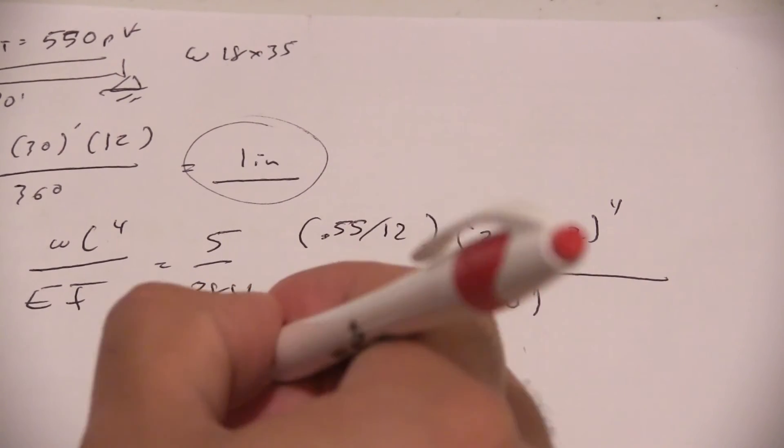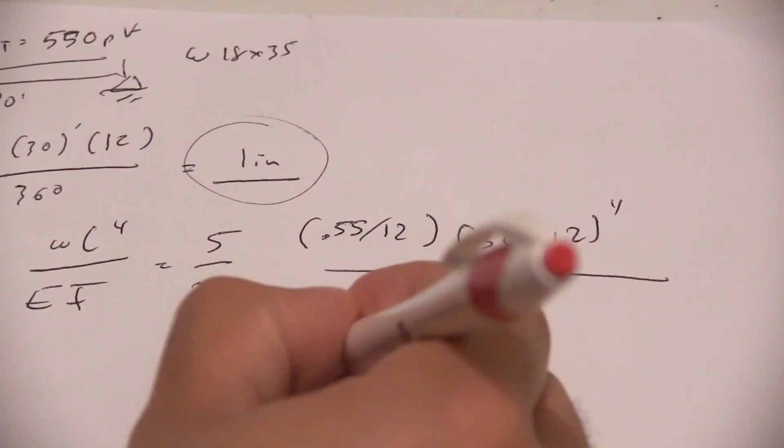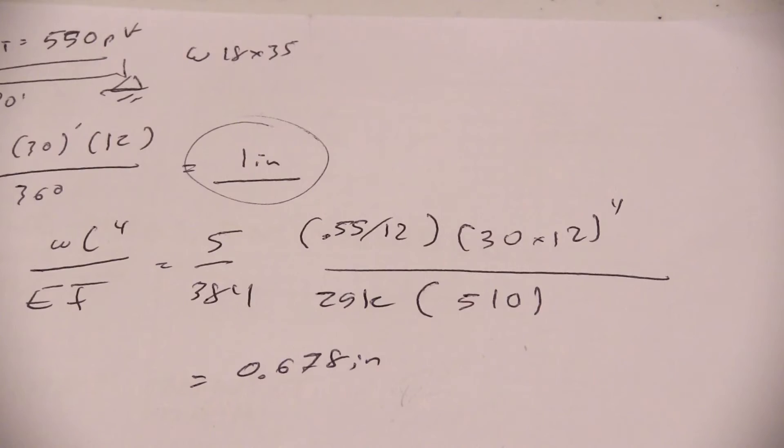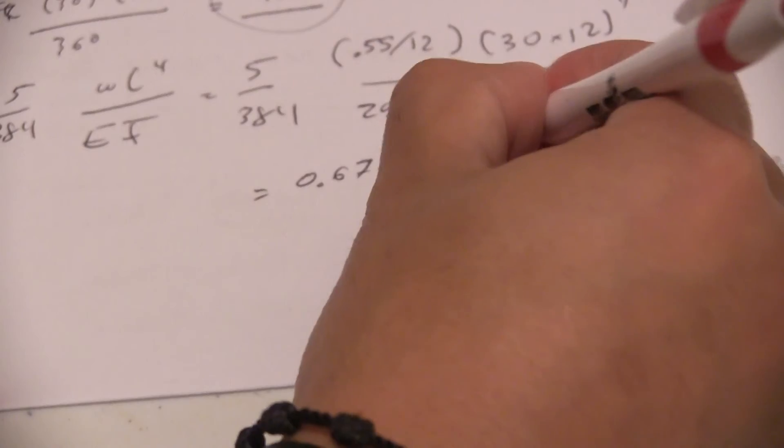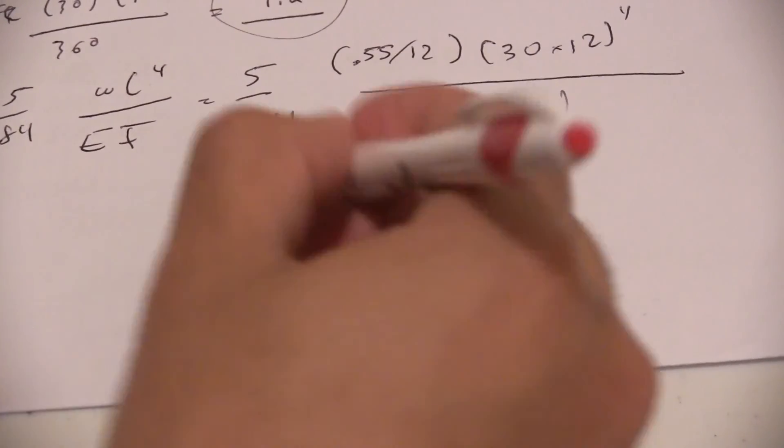This is going to give us a deflection of 0.678 inches. So in this case, this deflection is less than our allowable deflection, so this beam is good for deflection.